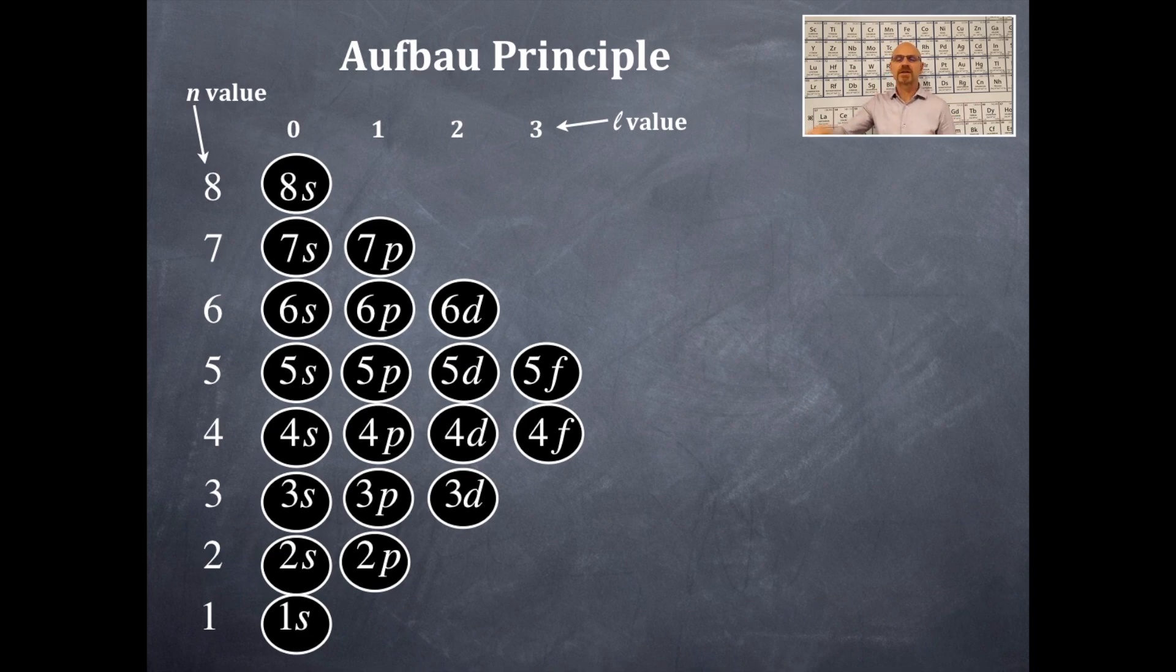You should see that the 1s, 2s, 3s, 4s, 5s, 6s, 7s, 8s. And L of 0 corresponds to an S-type orbital. So everything in the far left-hand row is an S-type orbital. That's why it's 1s, 2s, 3s, 4s, 5s, 6s, 7s, 8s, etc.